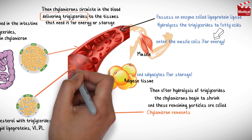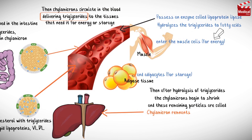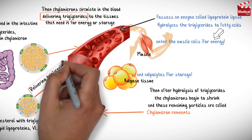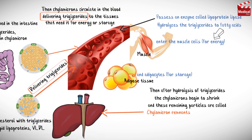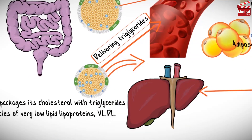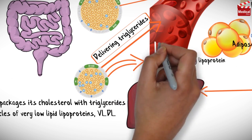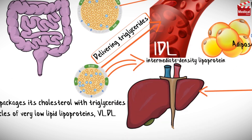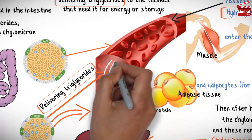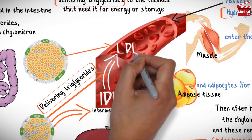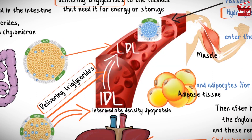VLDL travels in the bloodstream to other organs. During circulation, muscle and adipose tissues get fatty acids from VLDL, again through hydrolysis of their content of triglycerides by lipoprotein lipase, turning it into intermediate-density lipoprotein, IDL, which is then converted through circulation to low-density lipoprotein, LDL.